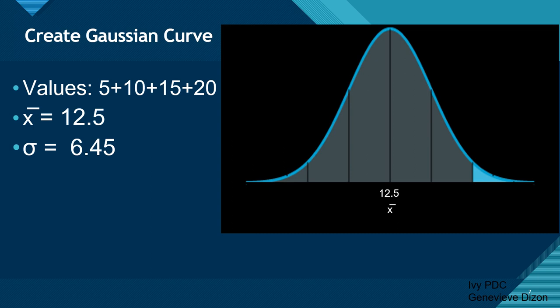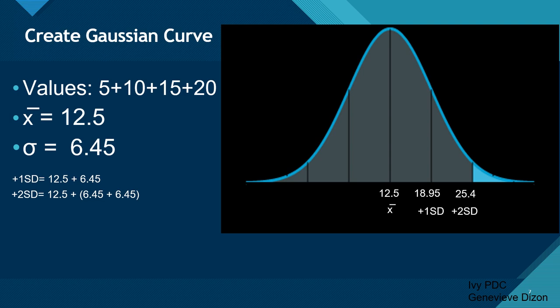For the first interval, we put one standard deviation: we add 6.45 to the mean of 12.45, giving 18.95 as our +1SD. For the second interval, we add two SDs to the mean — 12.5 plus 6.5 plus 6.5 — giving 25.4 as the positive 2SD. And for the third interval, we add three standard deviations to the mean, giving us 31.85 as the positive 3SD.